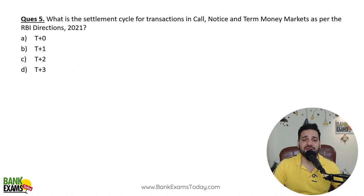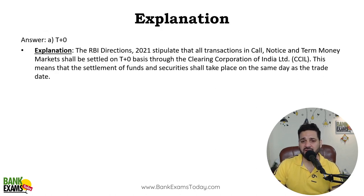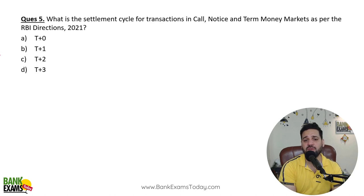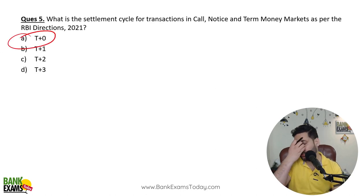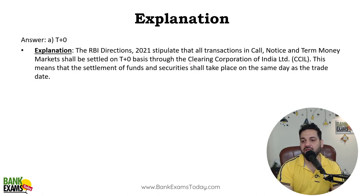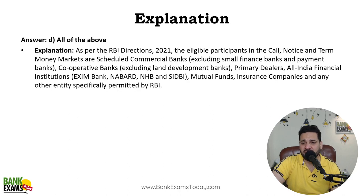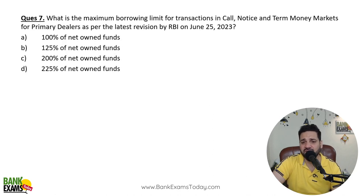What is the settlement cycle for transactions in call, notice, and term money markets as per the RBI guidelines 2021? It used to be T+1, but it has been changed to T+0 — settlement is made on the same day. T+0 is the correct answer, and it will be cleared through CCIL — Clearing Corporation of India Limited. All of the above entities are eligible, and the settlement cycle is T+0.